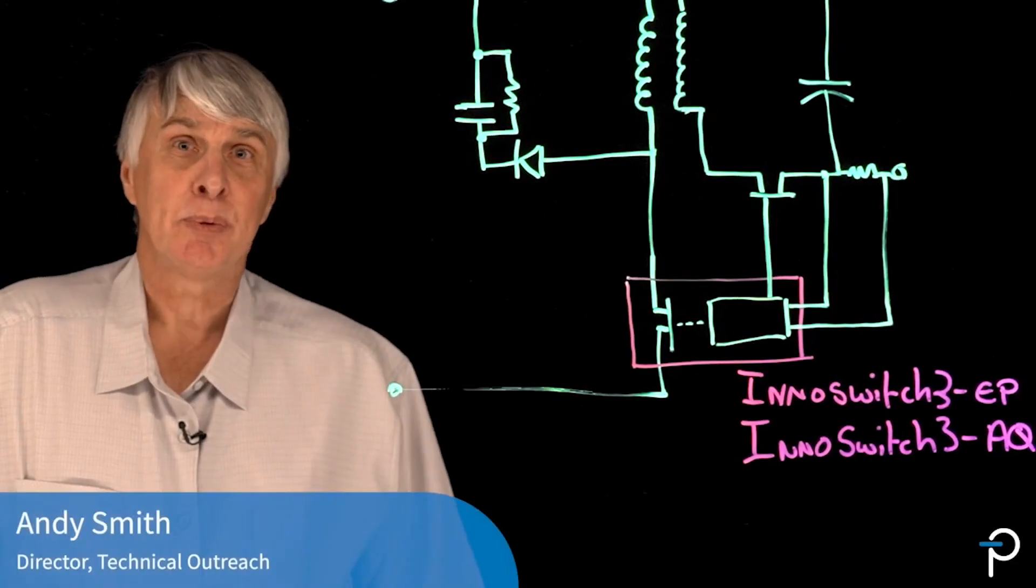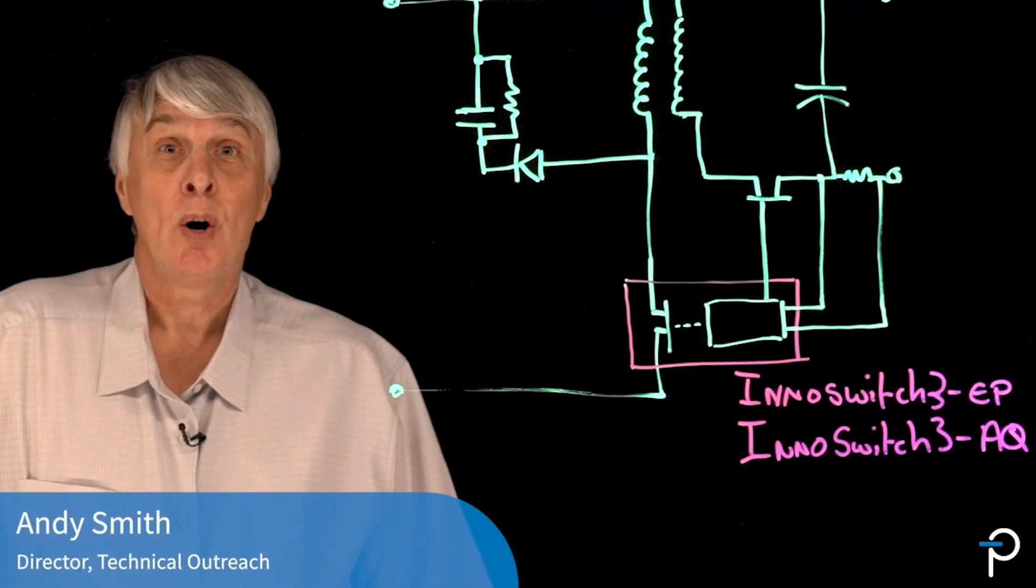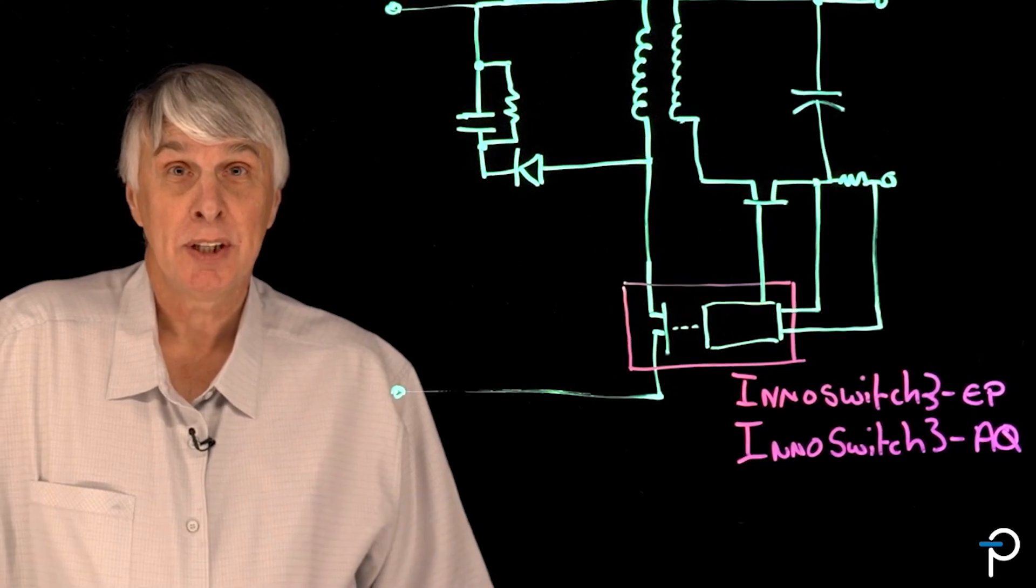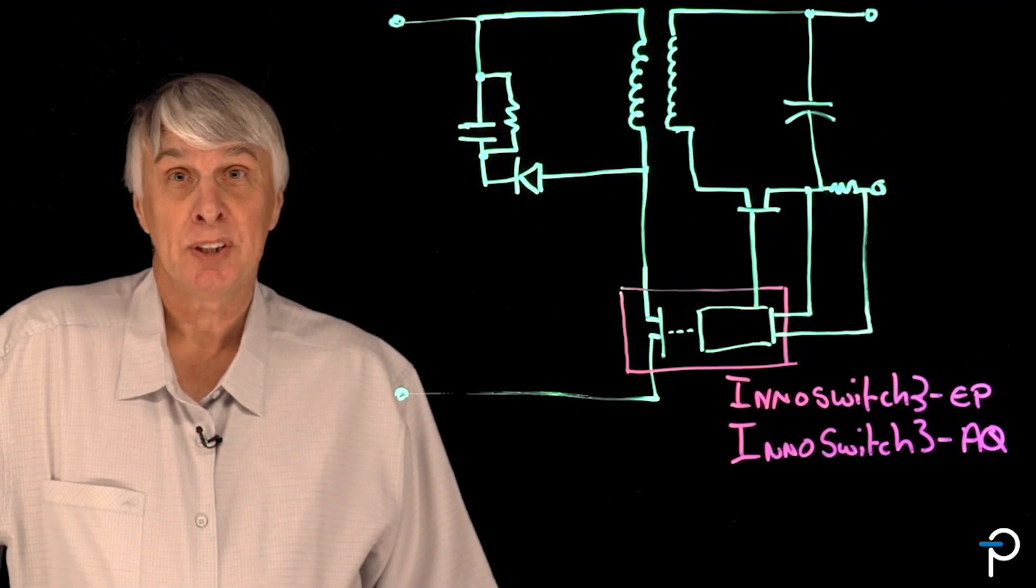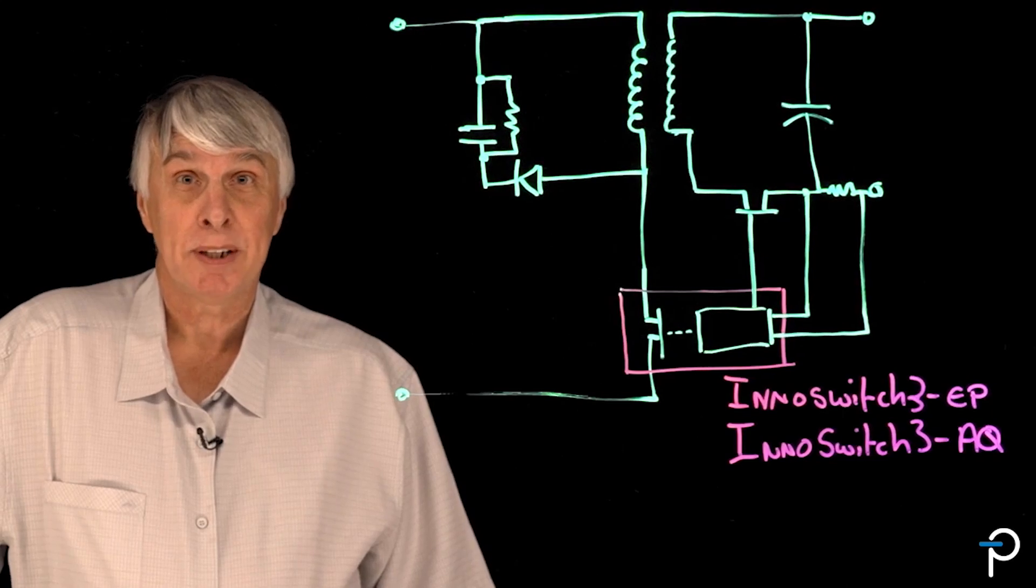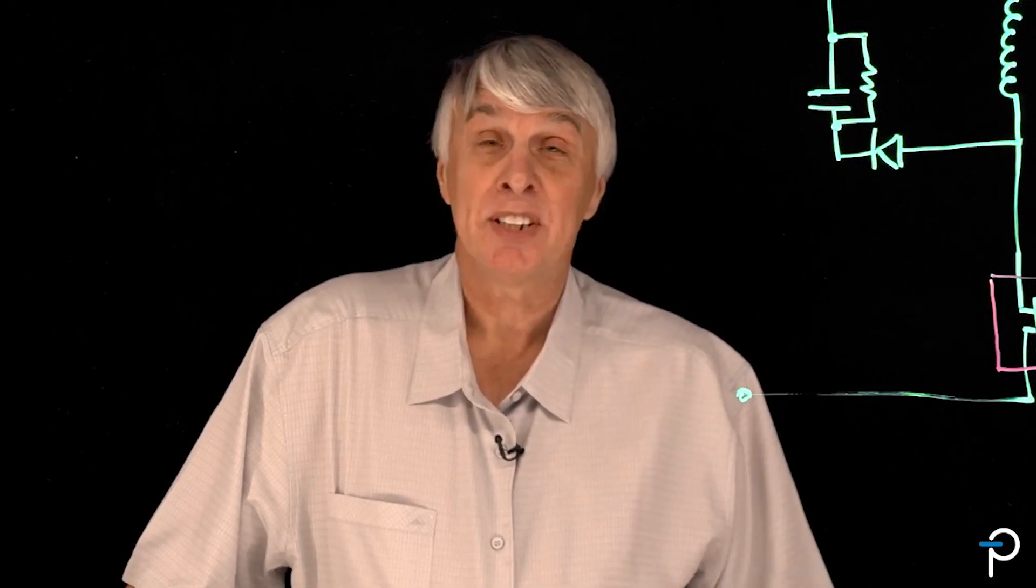Power Integrations has been very successful with its range of InnoSwitch3AQ Automotive Power Conversion ICs and its family of InnoSwitch3EP conversion ICs for appliance and industrial applications. We recently introduced the 900 volt Power GaN technology for these families, and I'm going to spend a few minutes about why we felt the need to introduce yet another voltage technology for these product families.